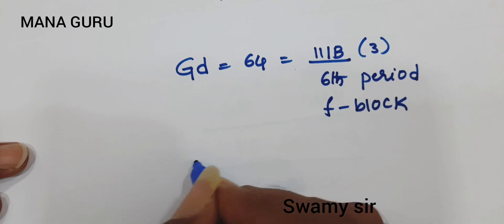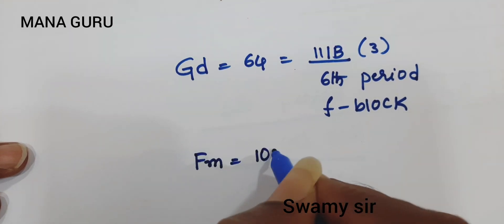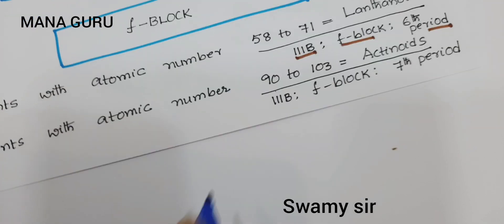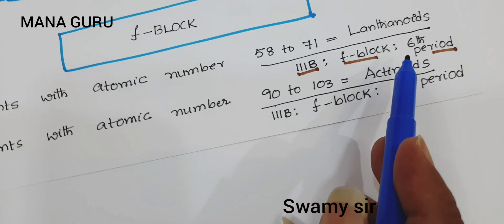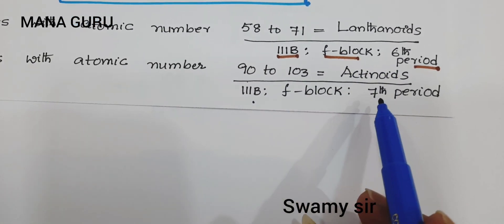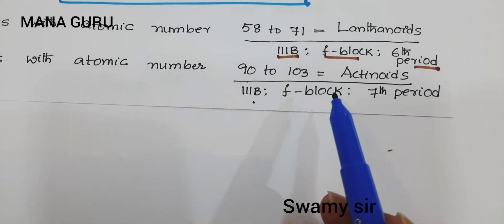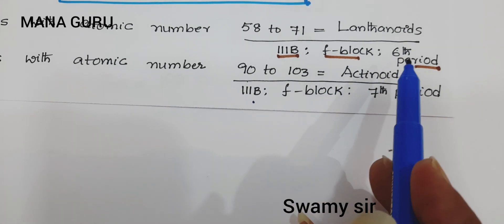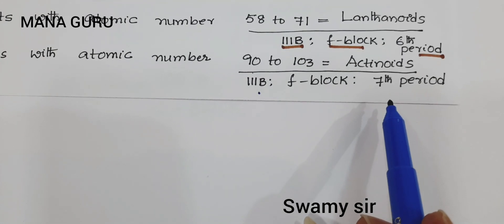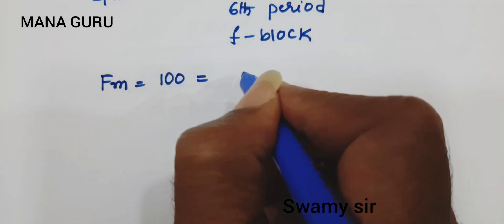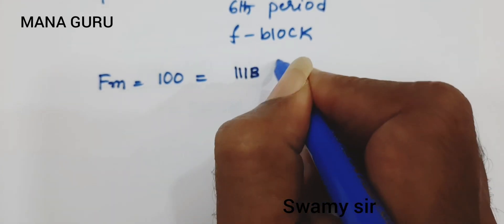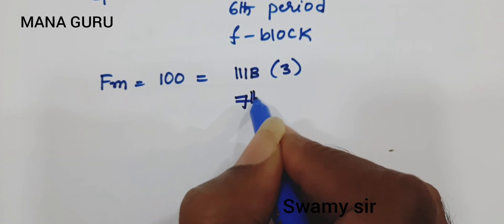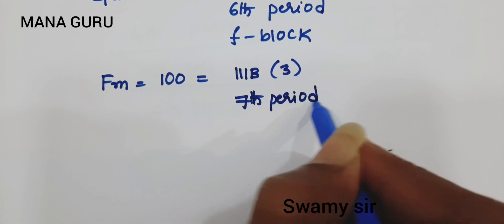Take the 100th element, fermium, atomic number 100. No need to write the configuration. Atomic numbers 90 to 103 are actinoids — they belong to third B group, F block, and seventh period. So fermium directly has group number 3B (modern group 3) and seventh period. The only difference between lanthanoids and actinoids is that lanthanoids belong to the sixth period and actinoids belong to the seventh period.